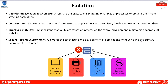Isolation in cybersecurity refers to separating resources or processes to prevent them from affecting each other — this is a form of containment used in incident response. If one system or application is compromised, isolation ensures the threat does not spread to others. This could mean shutting down a port or putting an interface into a private VLAN where it can't access other network resources or affect devices on separate VLANs.